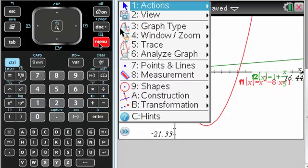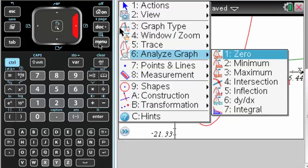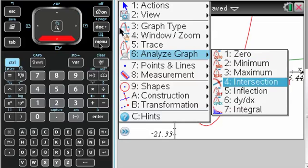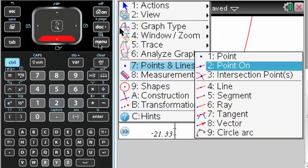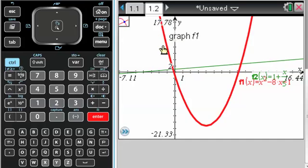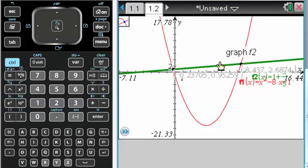Alright, so now I need to find some intersection points. So menu, I could do analyze graph and get intersections, but since there are only two and I want them both, I'm going to do intersection points from the points and lines. Select graph 1, select graph 2, they all pop up.